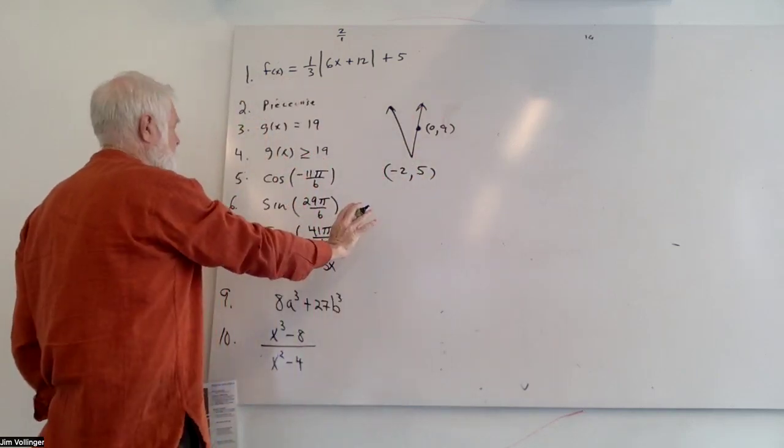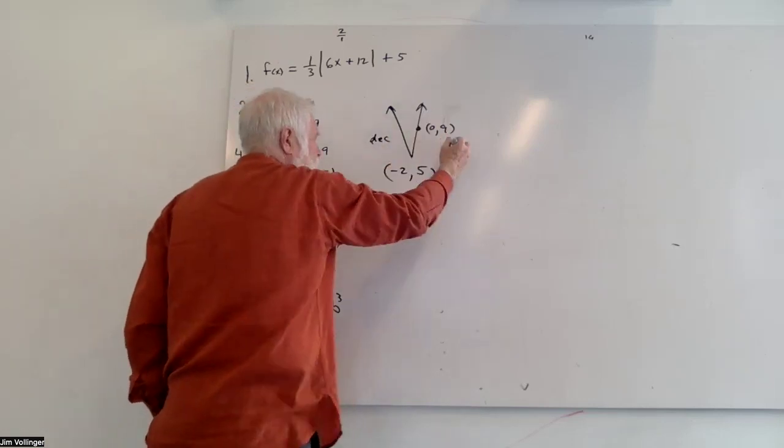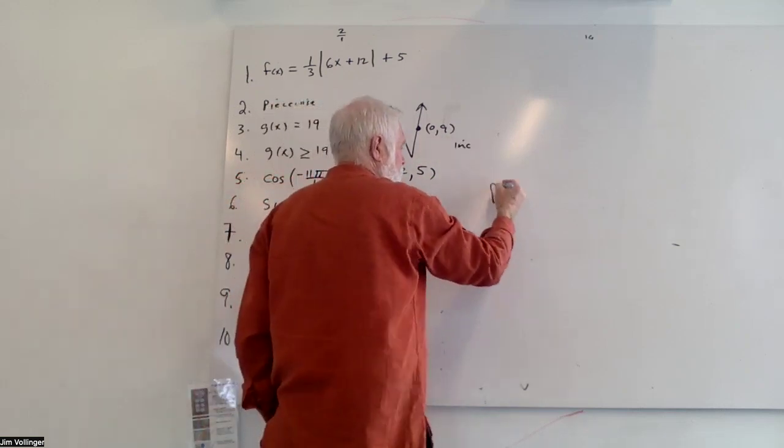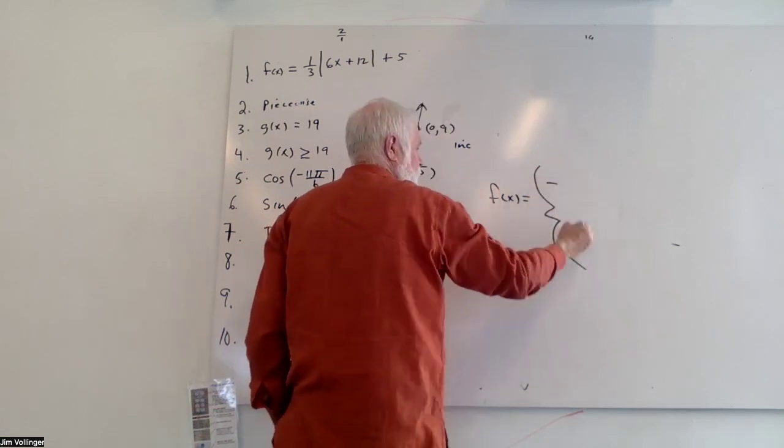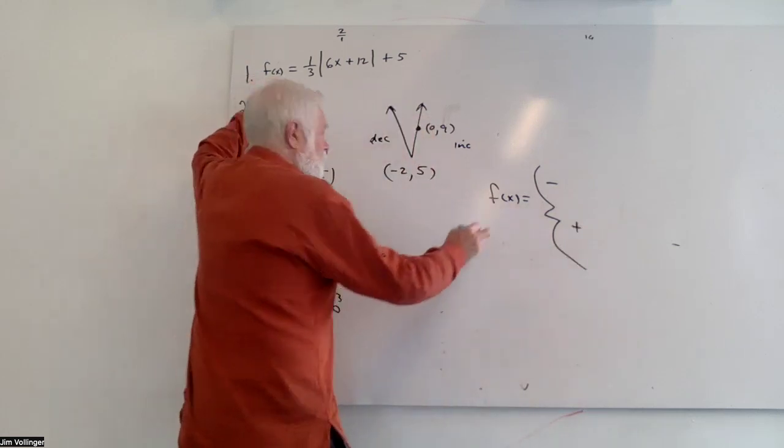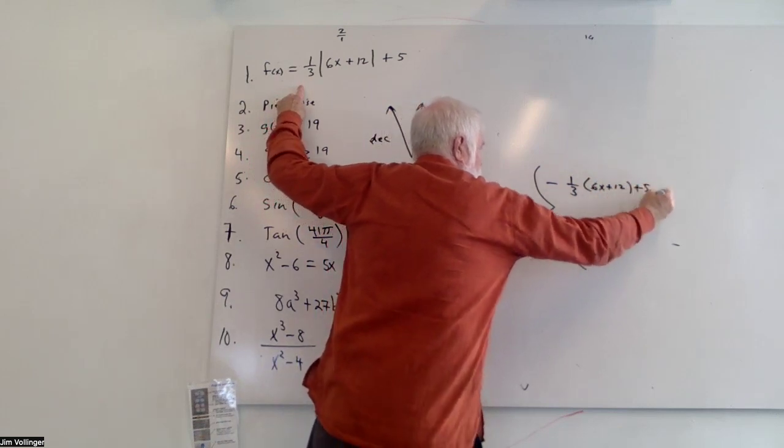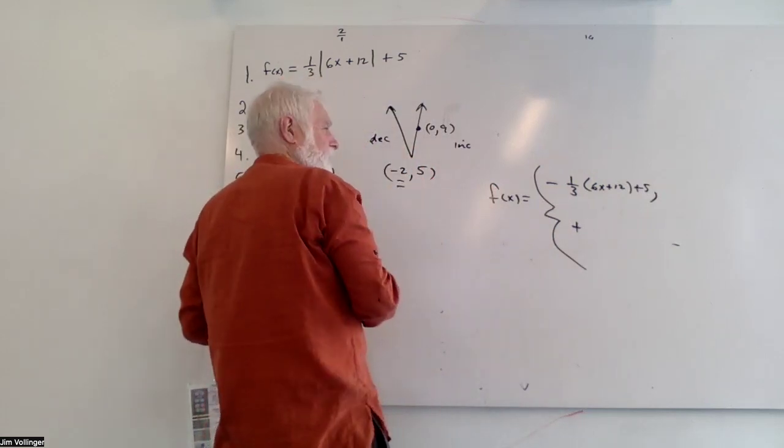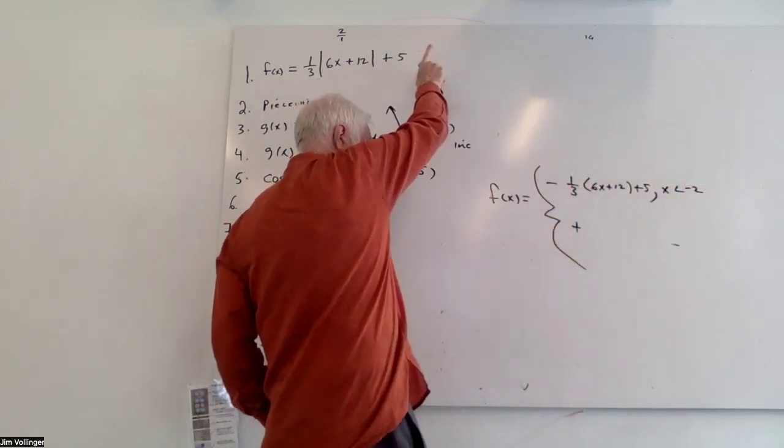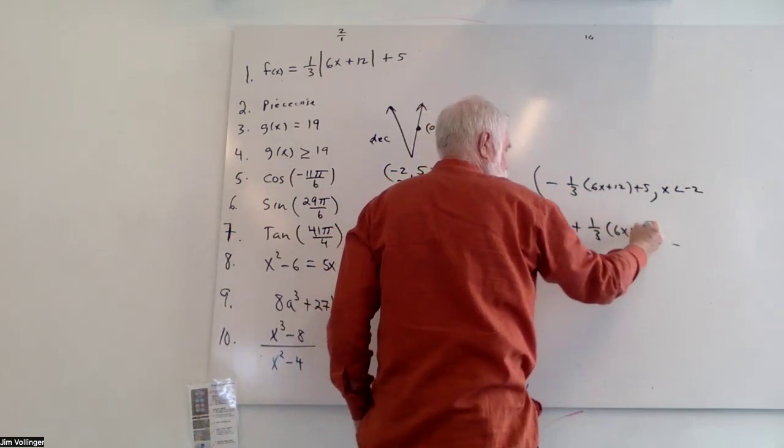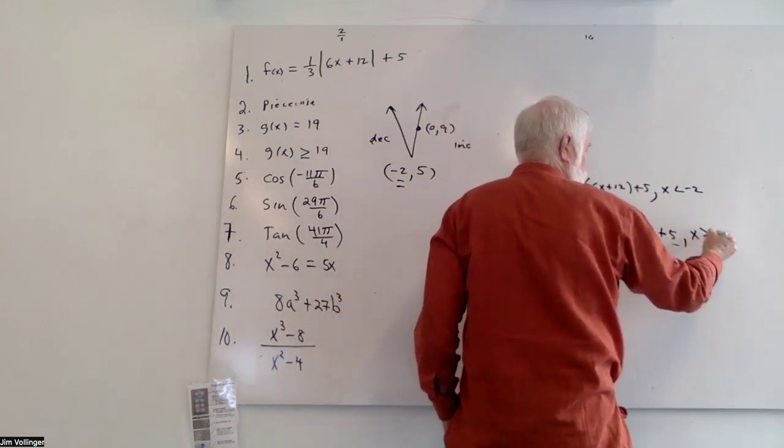So what is this as a piecewise function? As a piecewise function, we have a decreasing side, followed from left to right, and an increasing side. So f of x equals decreasing side, increasing side. And then all I have to do is copy. One-third, parentheses, 6x plus 12, plus five. But I'm only using that branch on the left side of negative two, which is for x values less than negative two. On the other side, I'm increasing. So it's positive one-third, 6x plus 12, plus five. For x's that are greater than or equal to negative two.